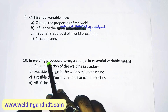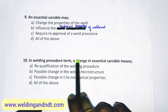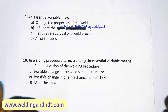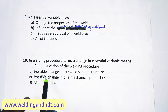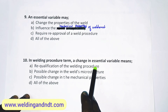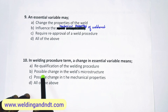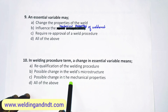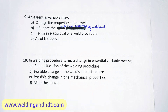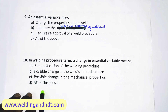Question number 10: In welding procedure terms, a change in essential variable means re-qualification of the welding procedure, possible change in weld microstructure, possible change in mechanical properties, or all of the above. The answer is D — all of the above.